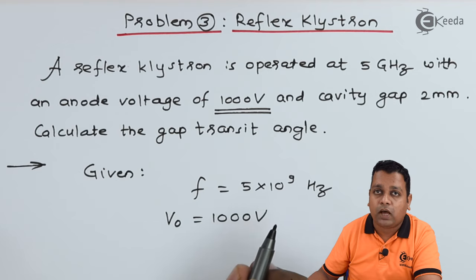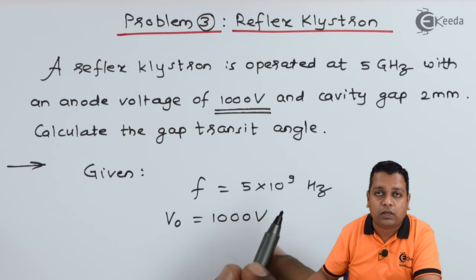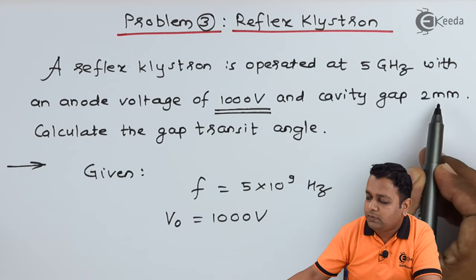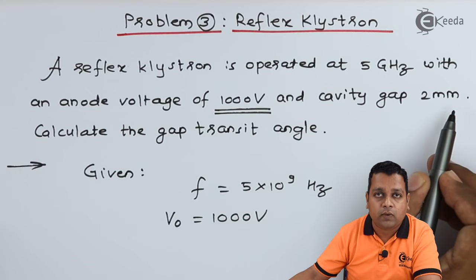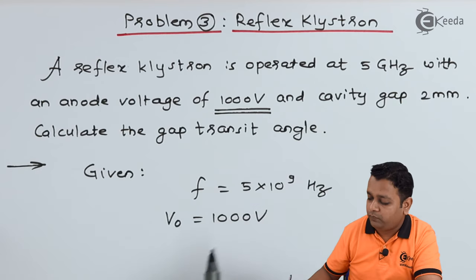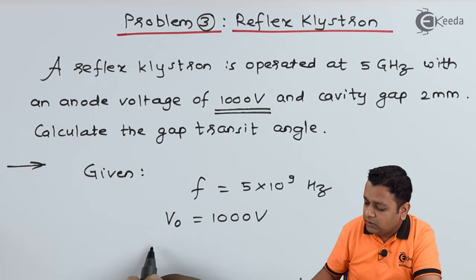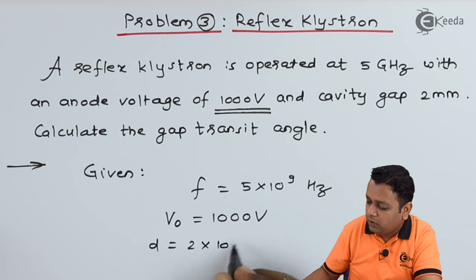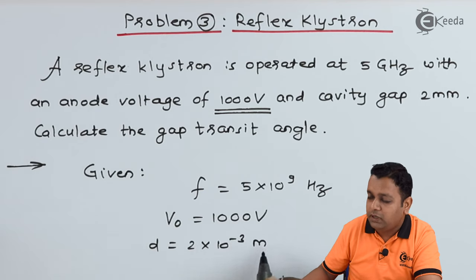Along with this, the dimension of the reflex klystron in terms of the gap spacing, the cavity gap spacing 2 mm is provided, the two grids of the reentrant cavity used in the reflex klystron. Here we have the separation denoted by small d and it is 2 mm, hence 2 × 10^-3 meters.